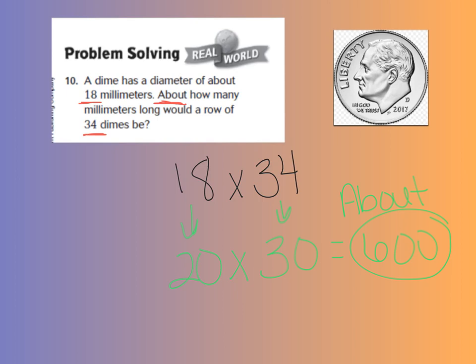Okay, when we estimate 18 times 34, 18 rounds to 20, 34 rounds to 30. And when we multiply, we're using our basic facts, we get 6 with our two zeros, which makes 600. So, about how many millimeters long would a row of 34 dimes be? It would be about 600.